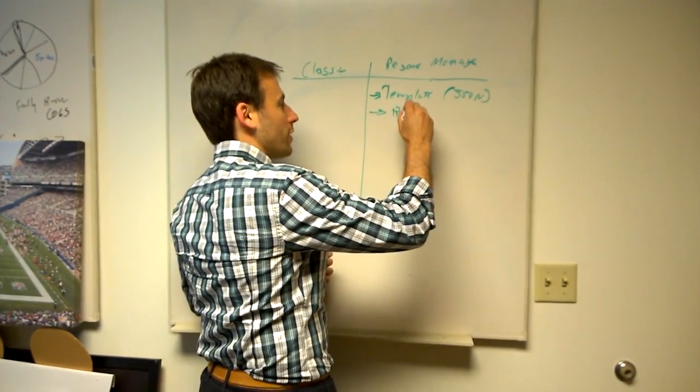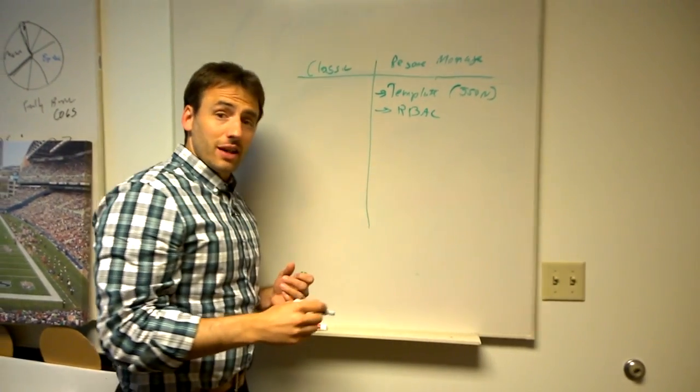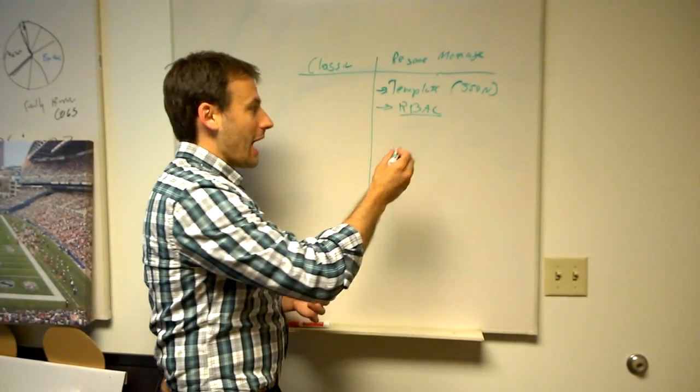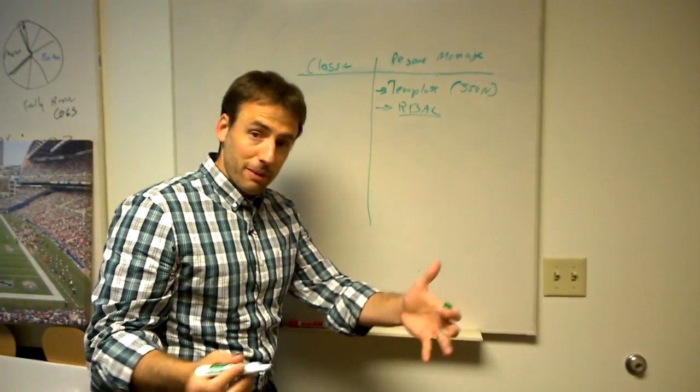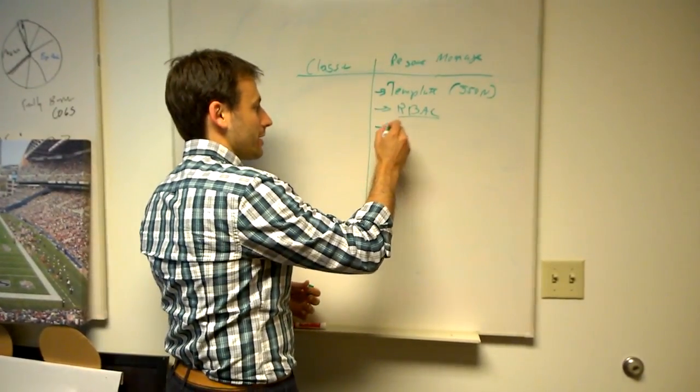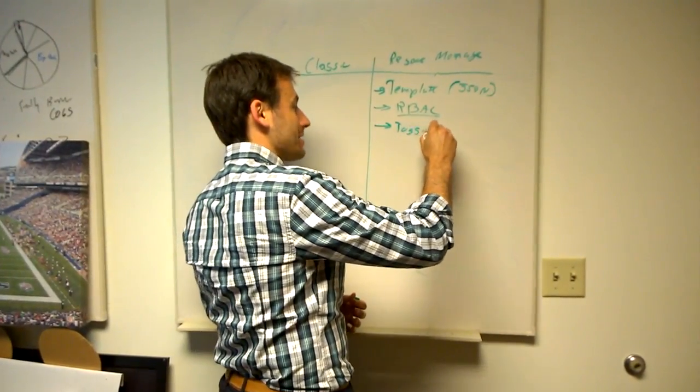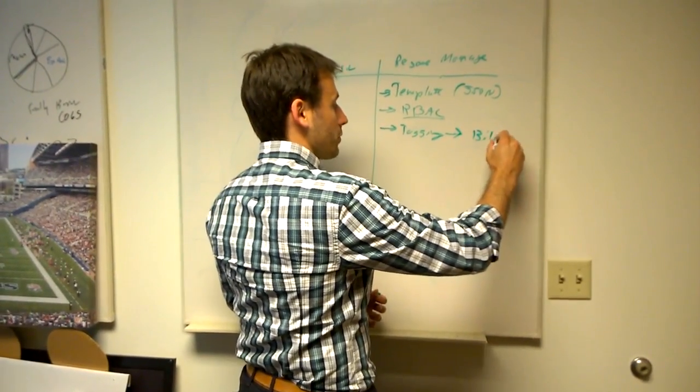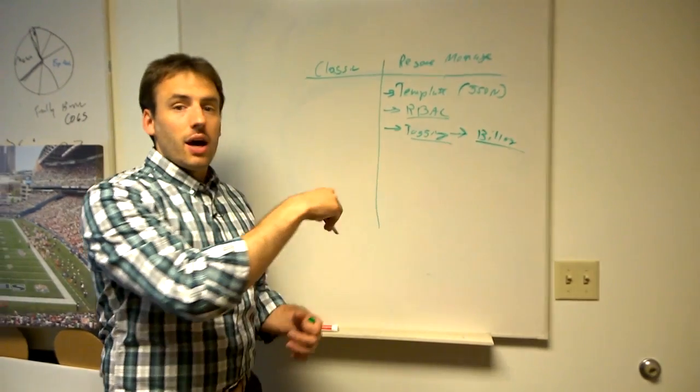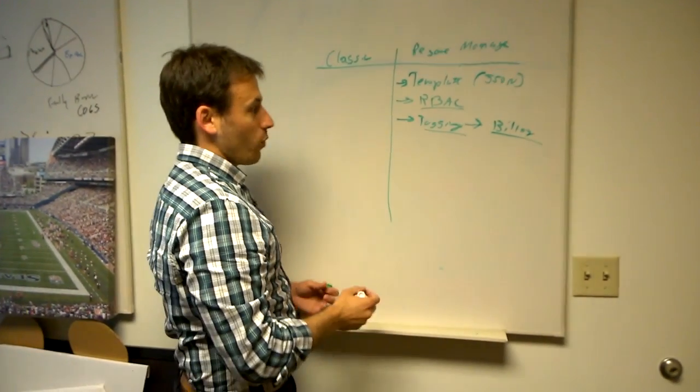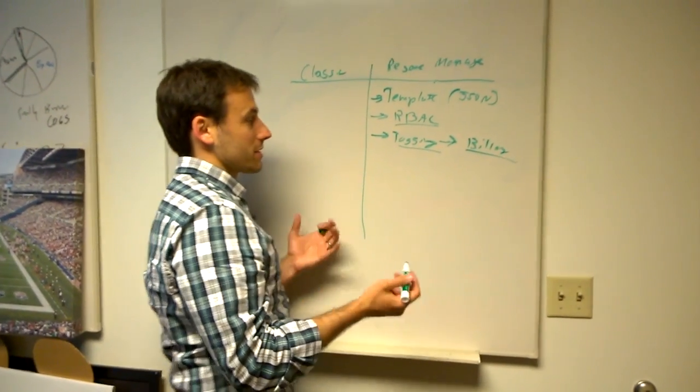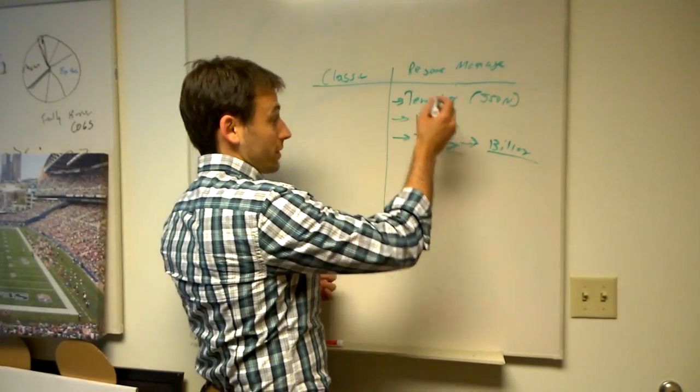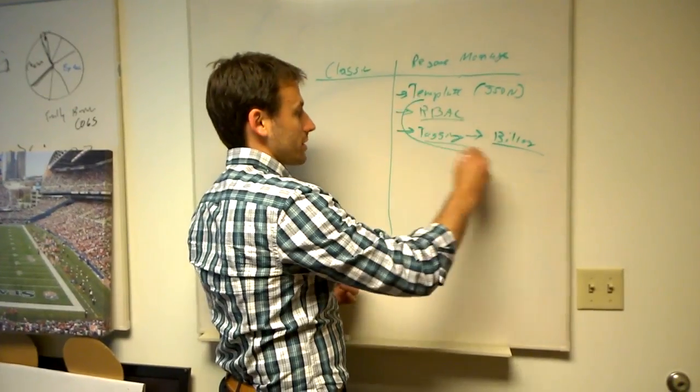On top of that, very granular role-based access control is available through this. You can actually by operation and by control access specific controls per people in your organization using Azure Active Directory. You also can tag resources, and this now is supported through the billing pipeline. So you will see those resources tagged showed up in your bill once it comes out on the other end. This is really exciting stuff that makes it possible to deploy and manage some great infrastructure.